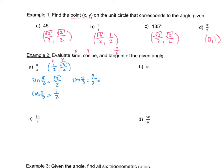Now I need to find tangent of pi over 3, which is y over x. That's square root of 3 over 2 divided by 1 half. To divide fractions, keep the top the same and flip the denominator. So square root of 3 over 2, multiplied by 2 over 1. The 2s cancel, leaving square root of 3 over 1, which is just square root of 3.